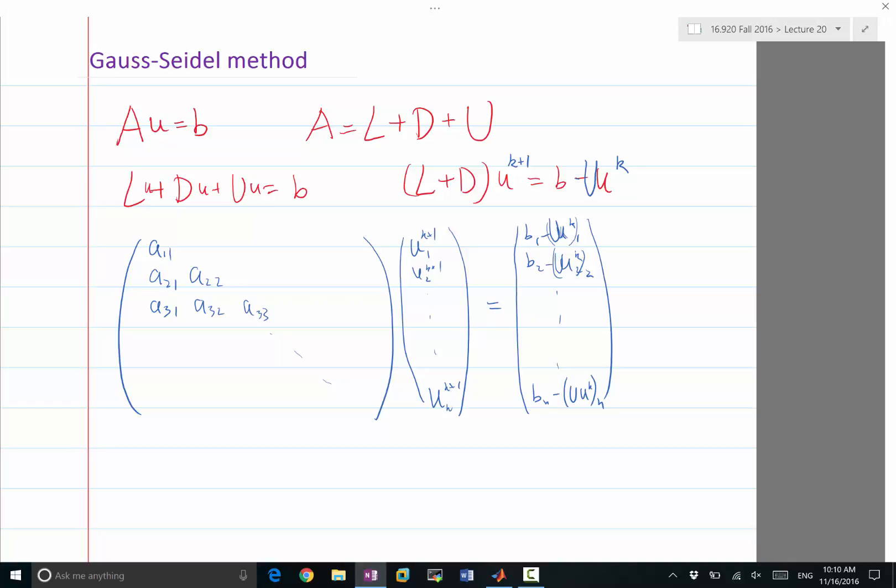Should we start from the first row or the last row? First row, because the first row is a11 times u1 of k+1 equal to a known number. So that is easy. We just need to take the reciprocal of a11 multiplied with the first row of the right-hand side. We get u1 of k+1.